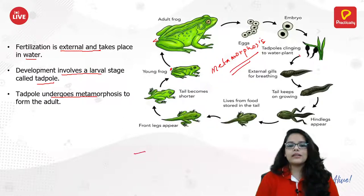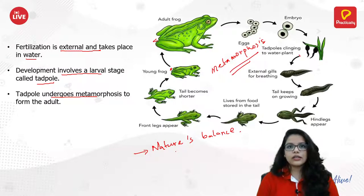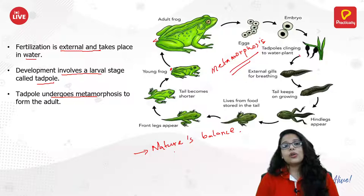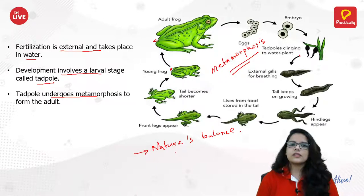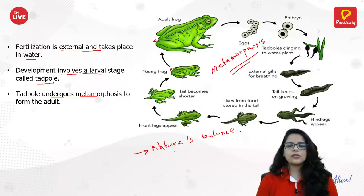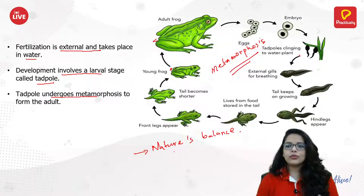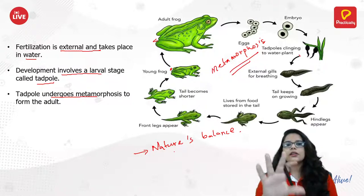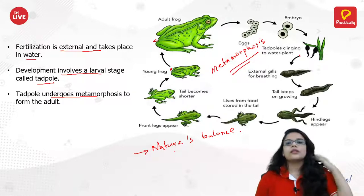Frogs play an important role in maintaining nature's balance. They eat a large number of insects, mosquitoes, and pests that could otherwise cause diseases and harm the environment. This is why frogs are so important in the food pyramid — they control pest populations and prevent them from disrupting the environment.